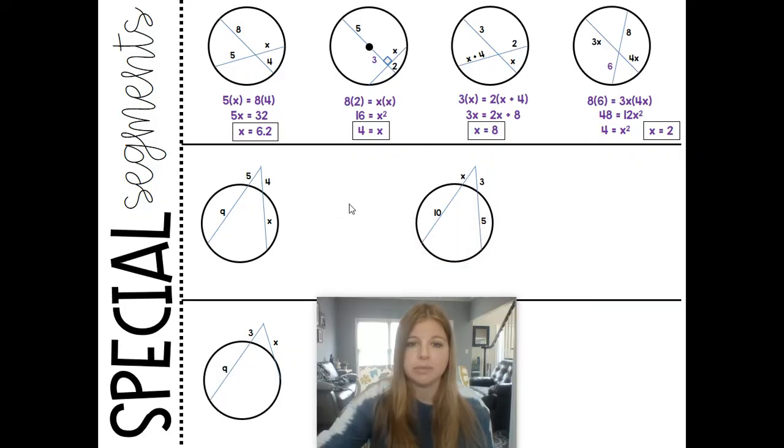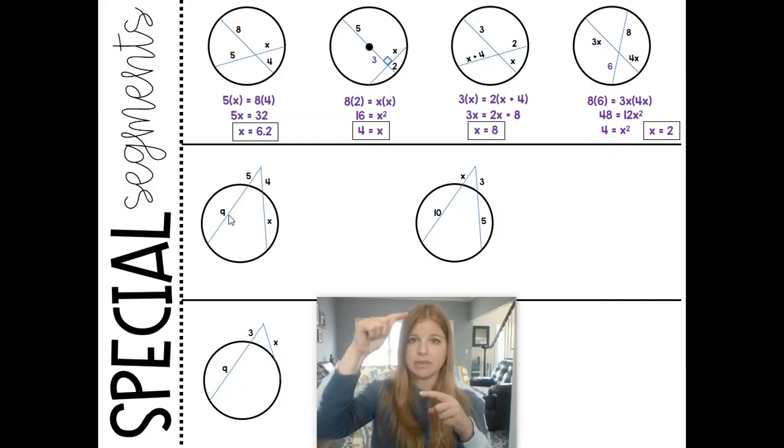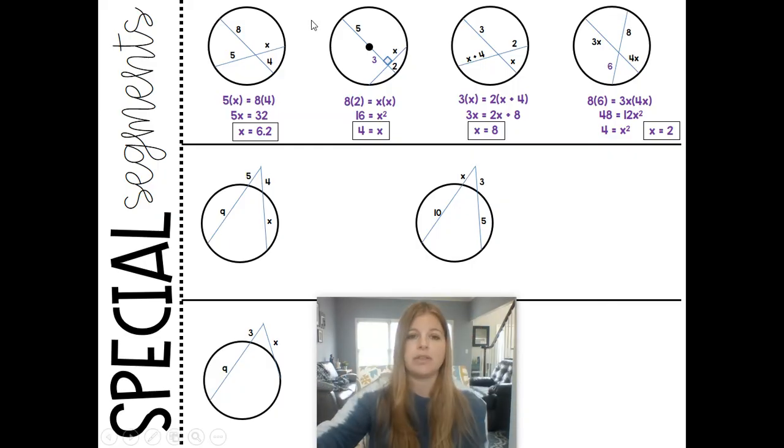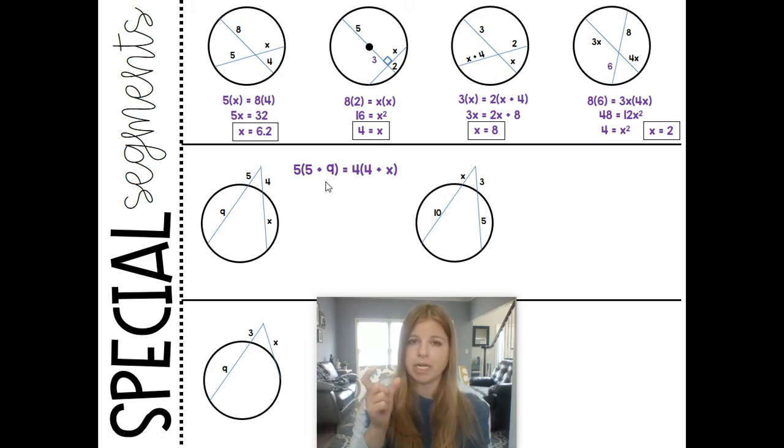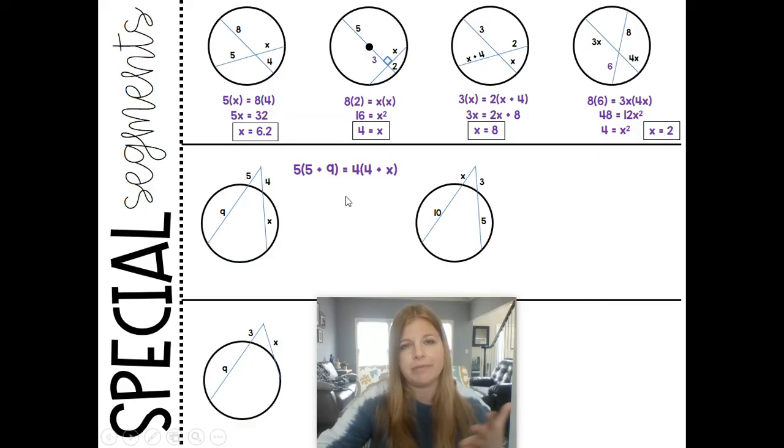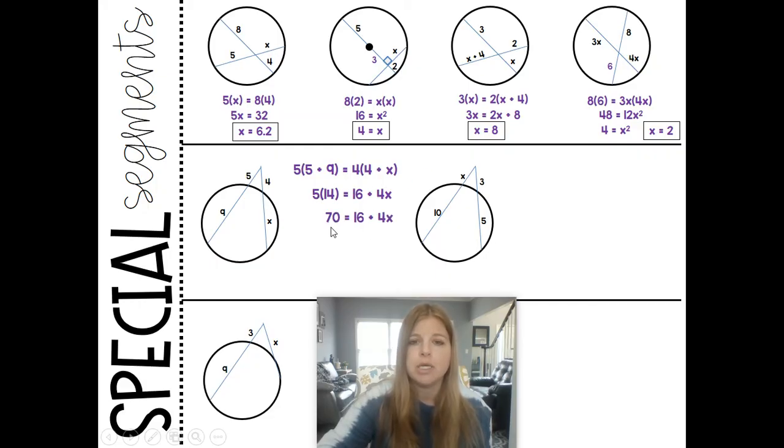Okay, the next two. Let's see. So we've got the external and then the entire length, and so we have to just be very careful with that. So it's the external times the entire length is equal to the external times the entire length. So here, it would be 5 times the entire length of 5 plus 9. Now I'm writing 5 plus 9 there. Of course, it's going to be 14. If you wanted to skip the step of writing 5 plus 9, please do. But in the other case, we have to make sure we write it out. So it's 4 times 4 plus X. 4 plus X is how you would call that entire secant. We start to do our math. We distribute our 4 over here on the right. We end up getting 70 equals 16 plus 4X. Subtract 16 on both sides, divide by 4, and X is equal to 13.5.